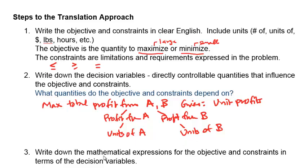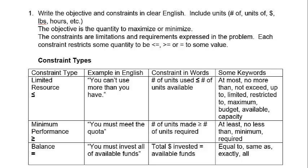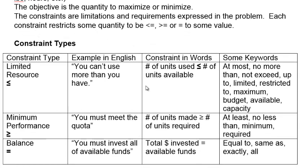The third step is to write down the mathematical expressions for the objective and the constraints that we identified in step one in terms of the decision variables from the second step. In the first step, where you write down the objective and the constraints in English, it helps to be able to categorize the different constraint types based on the words used in the problem. There are three kinds of constraints: less than or equal to for some kind of limited resource, greater than or equal to for some kind of minimum performance or requirement, and equal to for some kind of balance relationship. Here we listed some keywords that will help you identify which kind of constraint is appropriate.